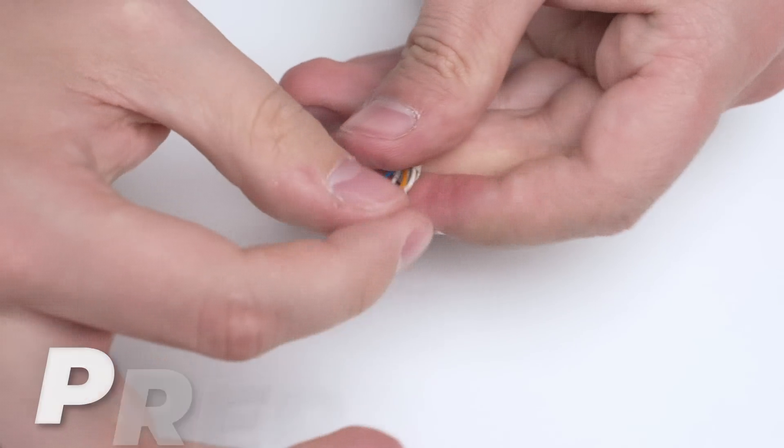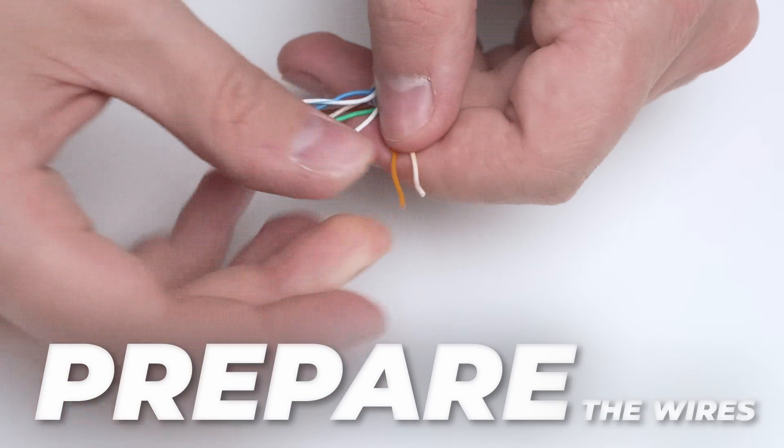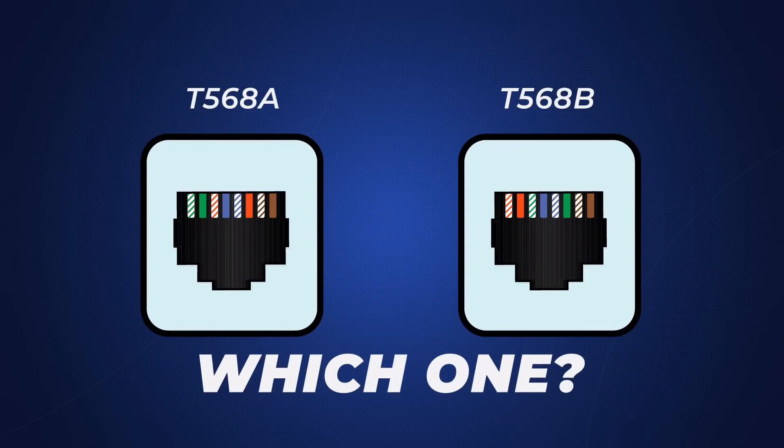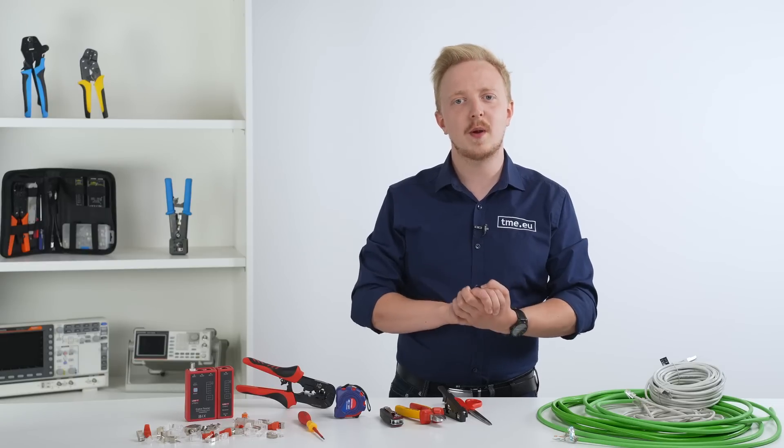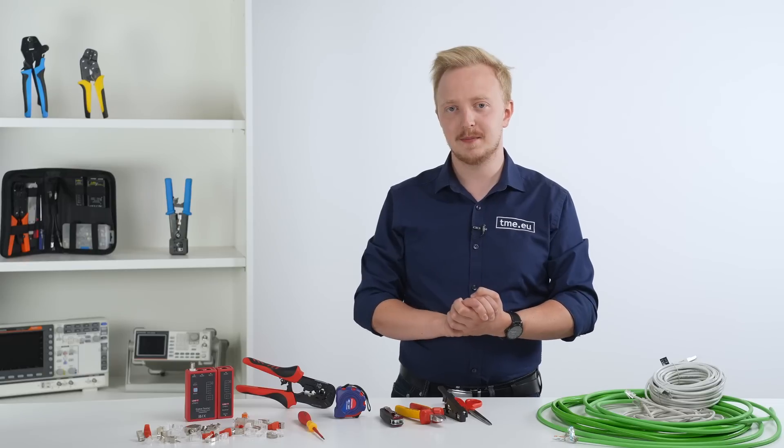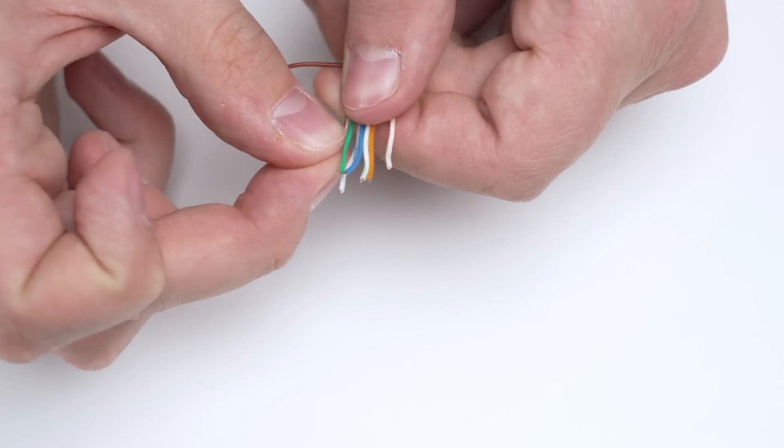Step 3. Prepare the wires. The inner wires need to be placed in the RJ45 plug in a specific order. T568A or B. It doesn't matter which one you choose. But it's crucial to crimp both ends of the cable the same way and use the same standard in one network. Put the wires side by side in the correct order. Hold them tightly and straighten them.